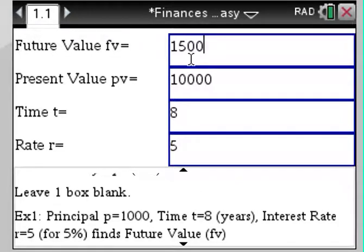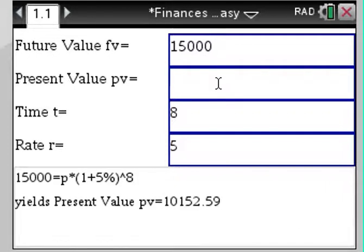If you enter the future value, let's say it is $15,000 and we leave the present value blank, we will get the present value computed immediately right here. Present value supposed to be about $10,000, and here it is. The same for time and rate can be computed as well by simply leaving the box blank.